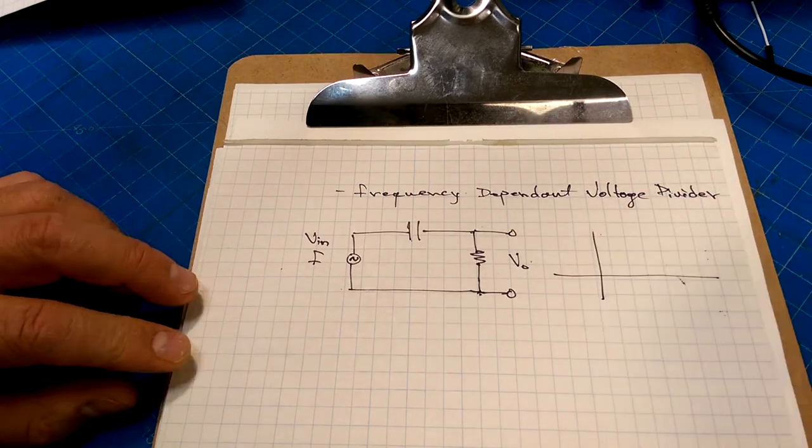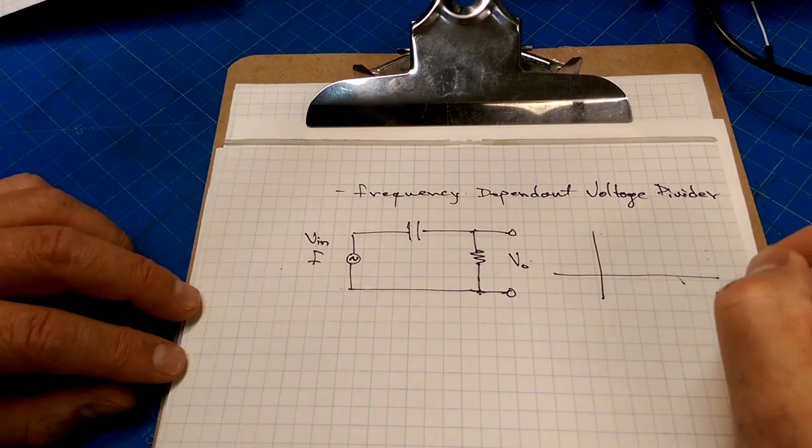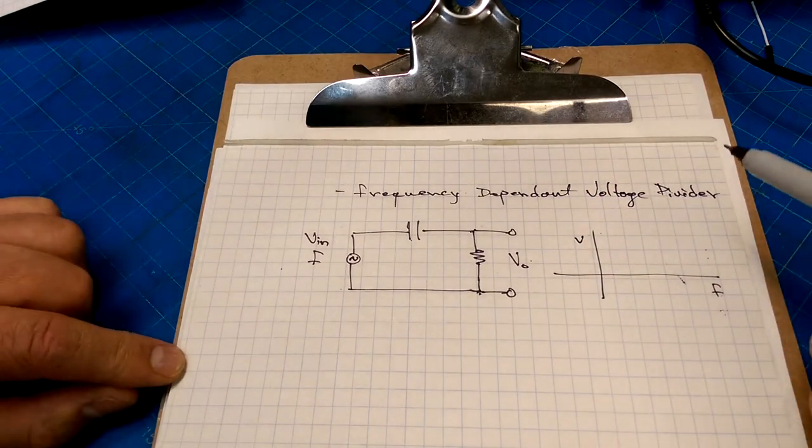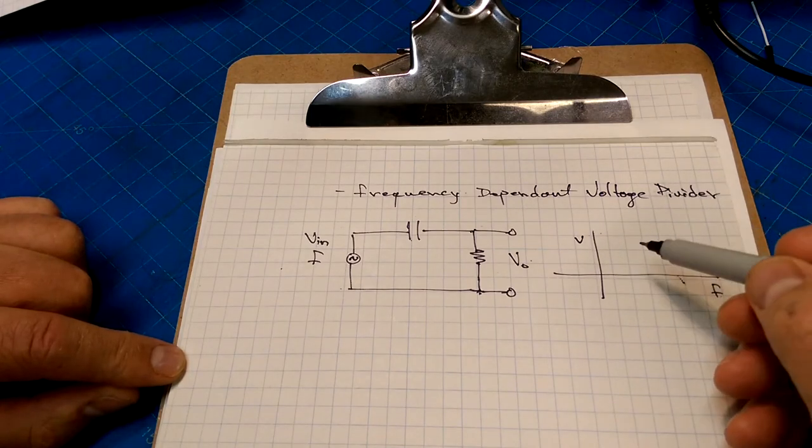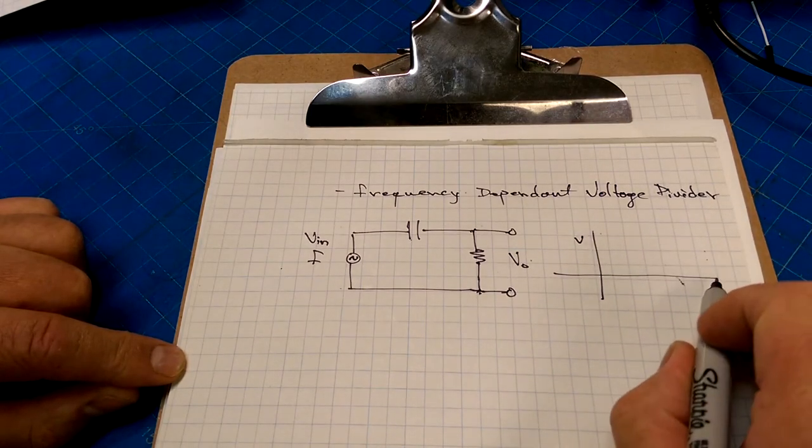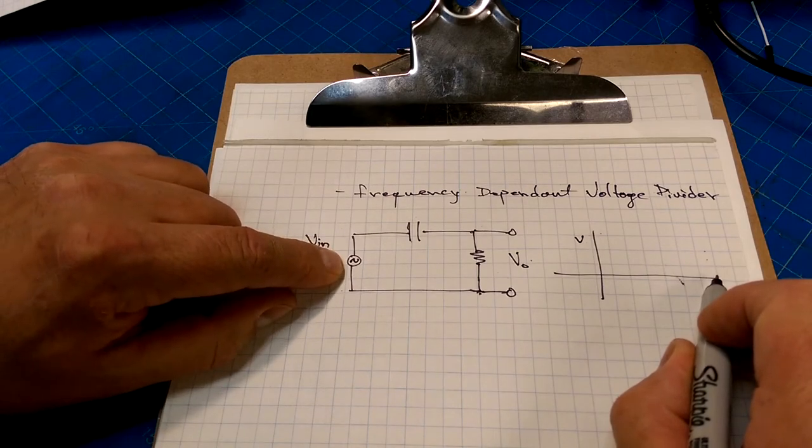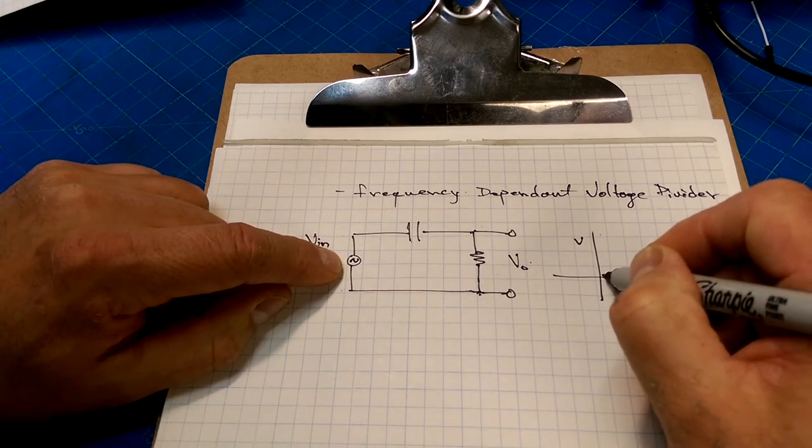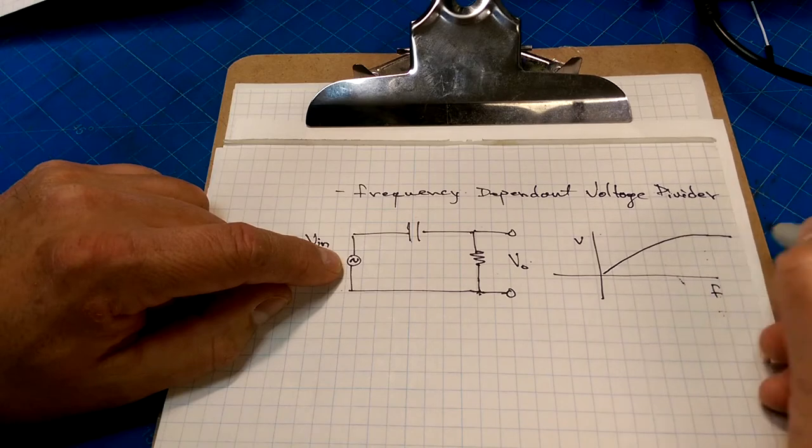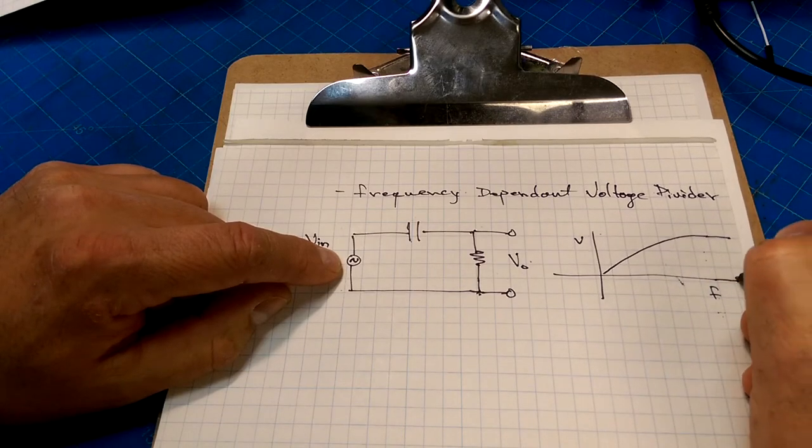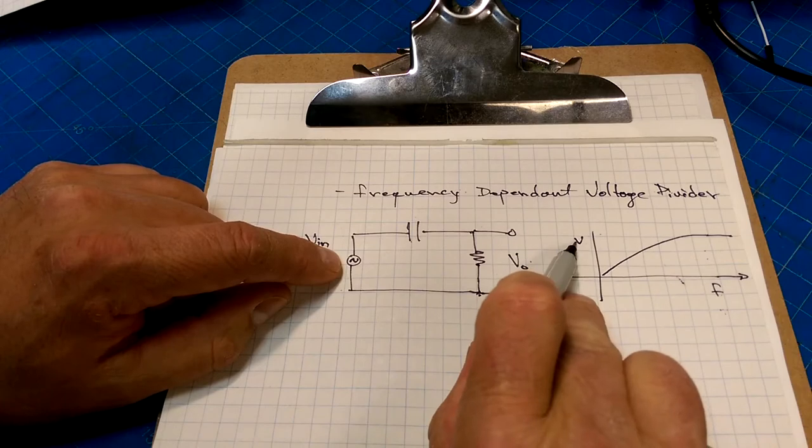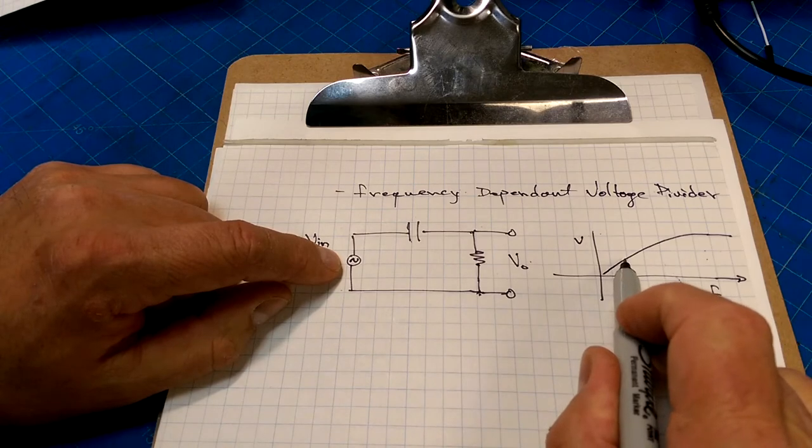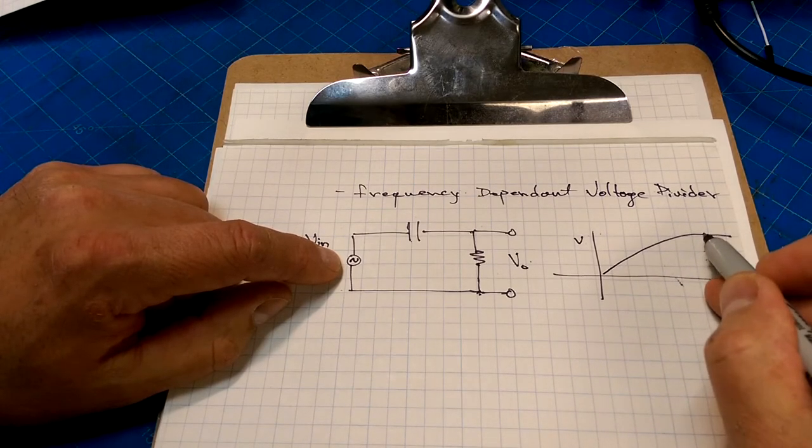If we do a mapping of voltage versus frequency, as the frequency increased on this configuration, we got more and more signal through. So it looked something like this. So as frequency gets larger, our transfer voltage gets higher. So at low frequencies, we got very little voltage through. But at high frequencies, we got more voltage through. So this is the high-pass filter configuration.